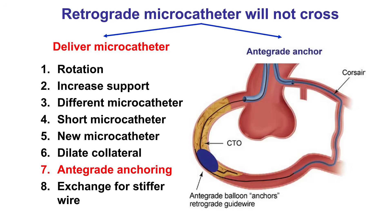The next option for increasing support assumes that we have an antegrade subintimal wire that is overlapped with the retrograde guide wire. If this is the case, an antegrade balloon can be inflated over the antegrade guide wire. What this does is pin the retrograde guide wire, essentially acting as a distal anchor, and that facilitates advancement of the retrograde microcatheter into the distal true lumen.